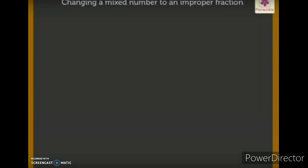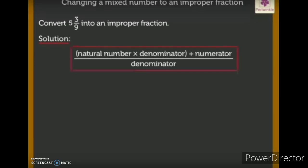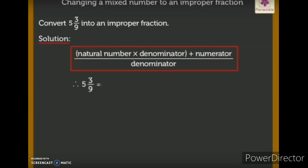Now let's see how to change a mixed number to an improper fraction. For example, five whole three by nine. The formula is: whole number multiplied by the denominator, plus numerator, divided by the denominator. Applying this to five whole three by nine: five multiplied by nine, plus three, divided by nine — which gives 45 plus 3 by 9, equal to 48 by 9.